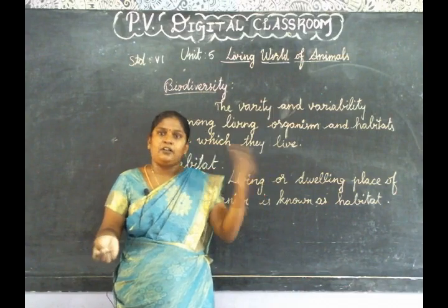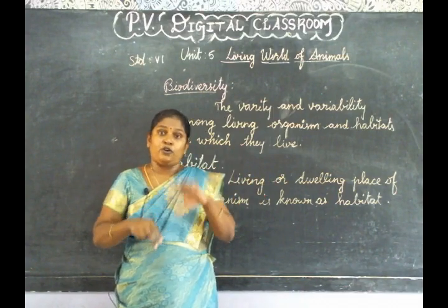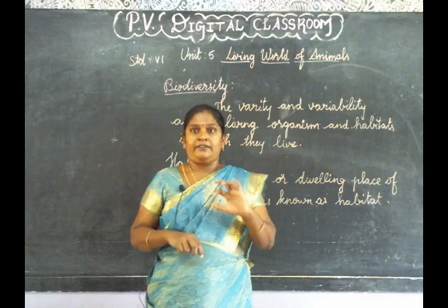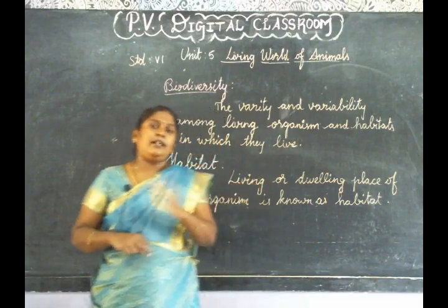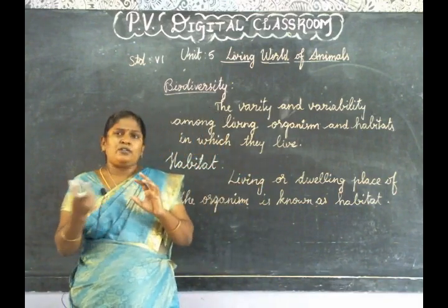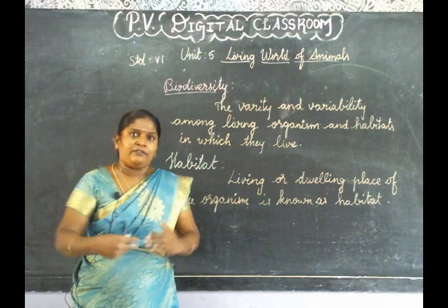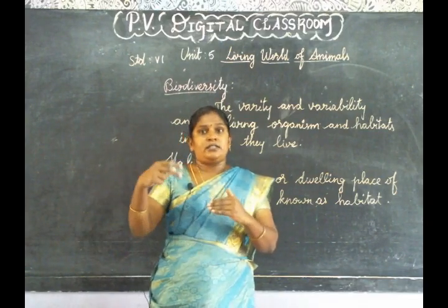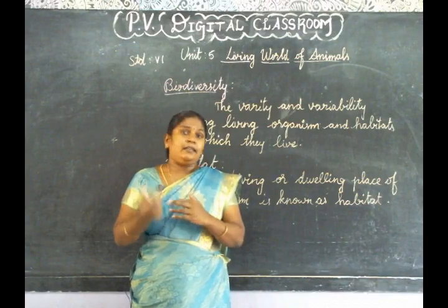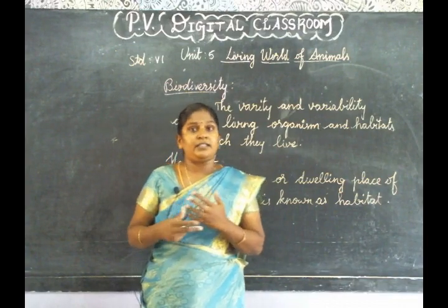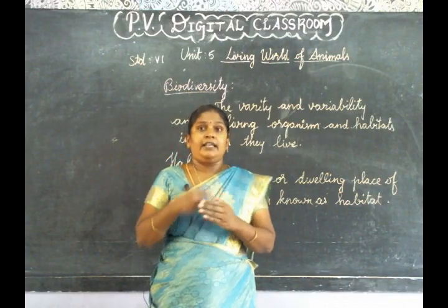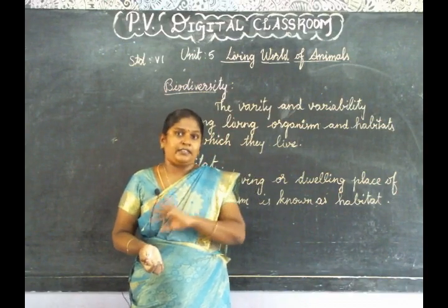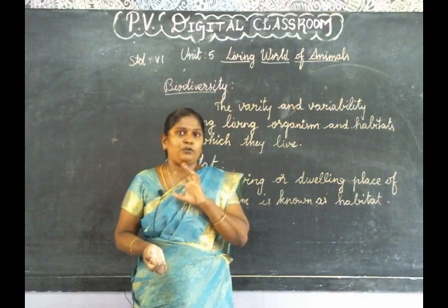Living things and non-living things together in one area — that is biodiversity. In the next topic, we will talk about diversity. Diversity is varied and different. It is an ecosystem — a very different ecosystem made by living things and non-living things.